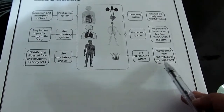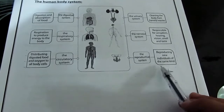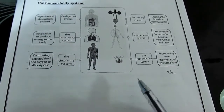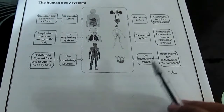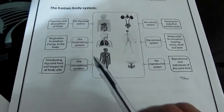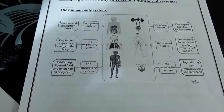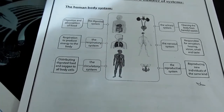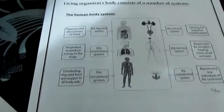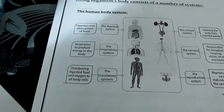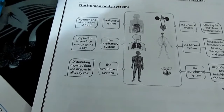To recap, some examples of our body systems are: digestive system, respiratory system, circulatory system, urinary system, nervous system, and reproductive system.